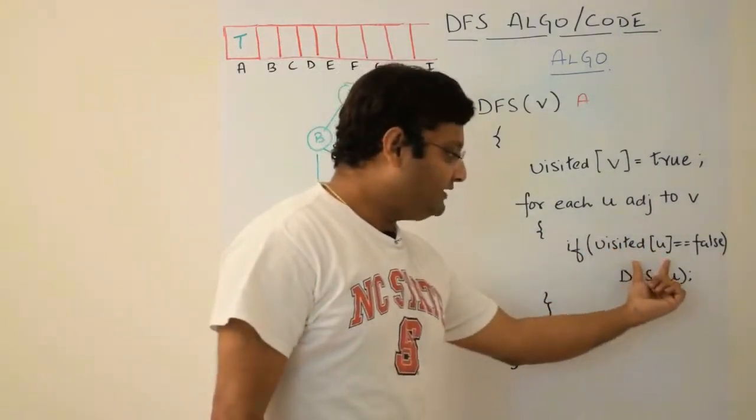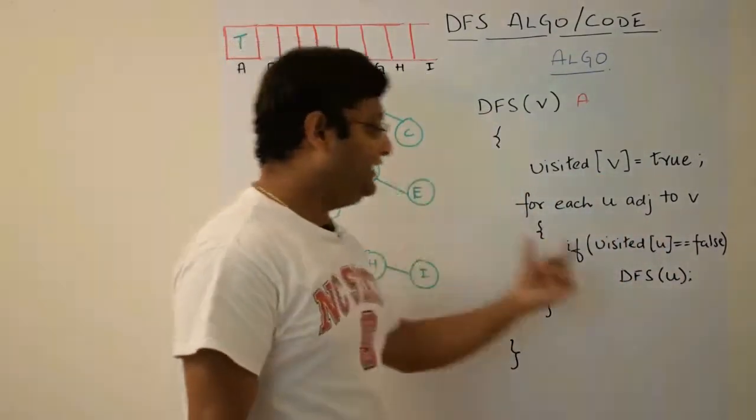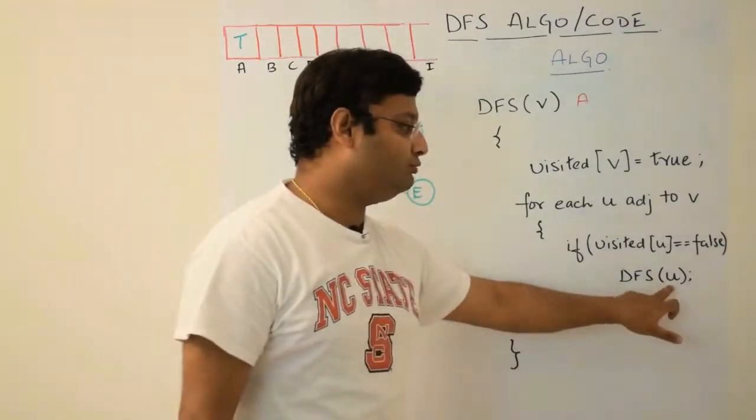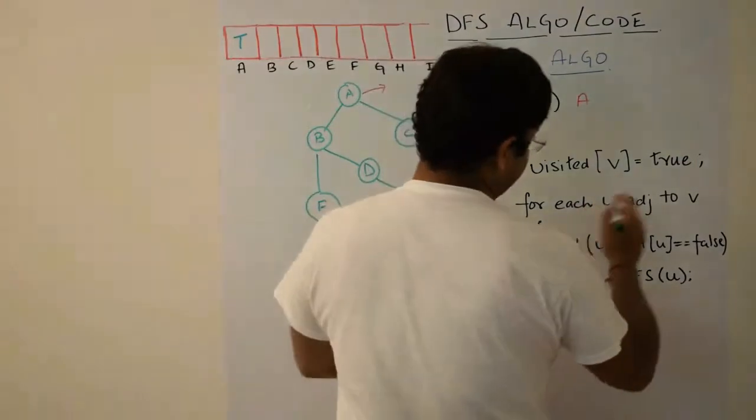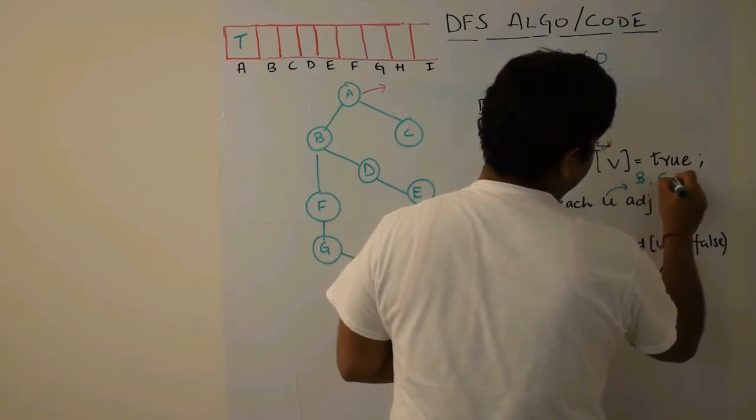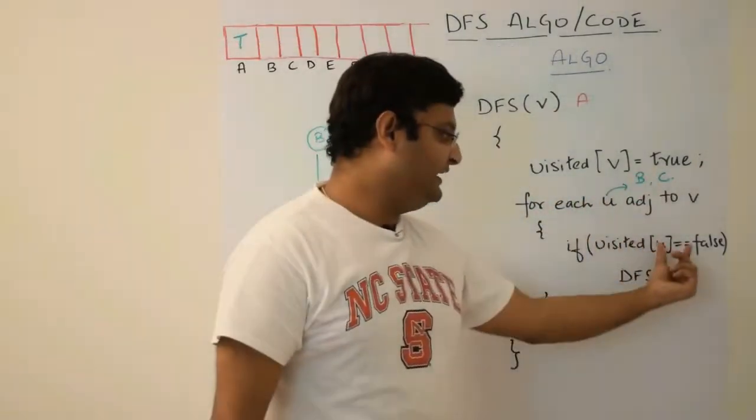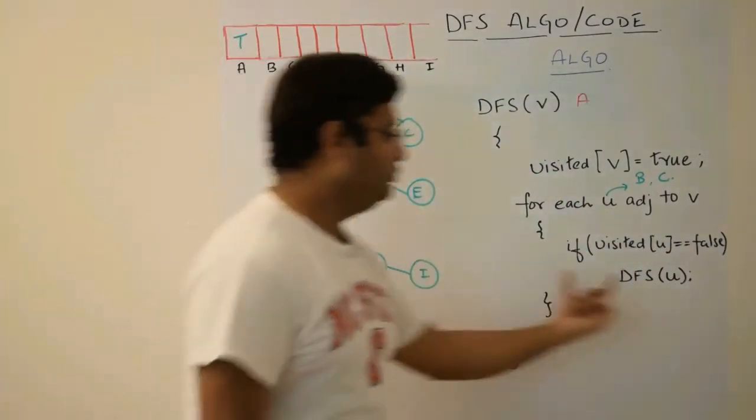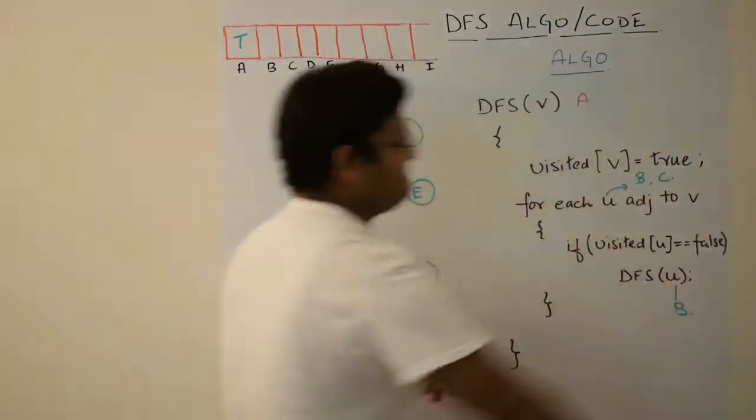So first of all, we'll have A. Now as soon as we have A here, it will go into this function and it will be marked as true. It means now A is visited. So let me mark here A as true. Now what is happening here? If you could see for each U adjacent to V, it means here you are all the neighbors of V. All the vertices of V which are adjacent to it for all those vertices. So here what are those vertices? What are the vertices adjacent to A? B and C.